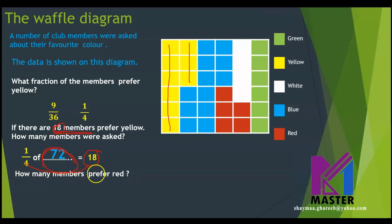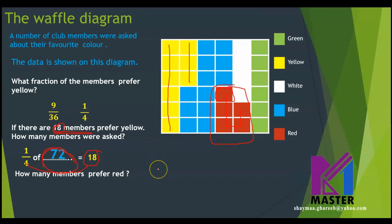Next question: How many members prefer red? As I now know that each part here represents two members, I will just count the squares and then double it. I have five parts, so I double it — it will be 10. Or, by using fractions of an amount: What fraction is the red? It's 5 over 36 of 72 — the total number of members. So, 72 divided by 36 equals 2, and 2 times 5 equals 10. Sometimes you can find the information on the waffle diagram mentally without using fractions of an amount.